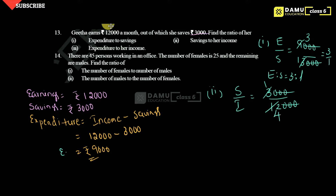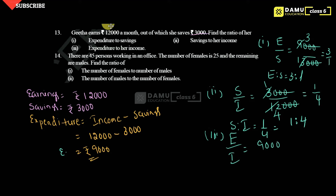So savings to income: 3 ones are 3, 4 ones are 4 — so savings to income is 1 is to 4. Then third one, expenditure to income: so expenditure is what — 9,000; income is what — 12,000. Then cancel the zeros — 3 threes are 9, 3 fours are 12 — so three by four, that is 3 is to 4.